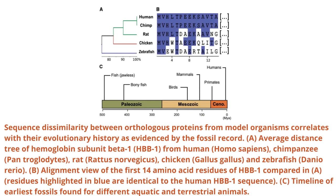Sequence dissimilarity between orthologous proteins from model organisms correlates with their evolutionary history, as evidenced by the fossil record. Shown here is an average distance tree of hemoglobin subunit beta 1 (HBB1) from human (Homo sapiens), chimpanzee (Pan troglodytes), rat (Rattus norvegicus), chicken (Gallus gallus), and zebrafish (Danio rerio), alongside an alignment view of the first 14 amino acid residues of HBB1. Residues highlighted in blue are identical to the human HBB1 sequence. Also shown is a timeline of earliest fossils found for different aquatic and terrestrial animals.